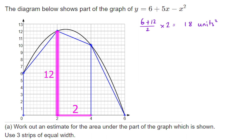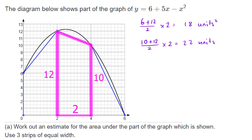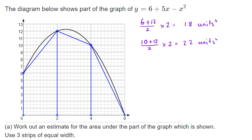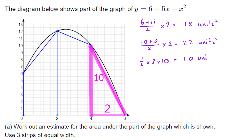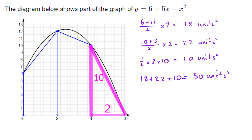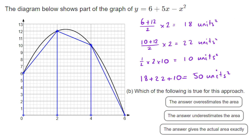The second trapezium also has a width of 2. The two heights are 12 and 10. So 10 + 12 = 22, half of that is 11, multiplied by the width of 2 gives an area of 22. The final shape is a triangle with a base of 2 and a height of 10, so half base times height gives 1 × 10 = 10. Adding all three areas together: 18 + 22 = 40, plus 10 = 50 units squared.